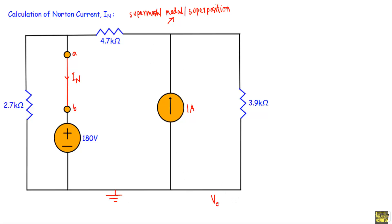Let this be our ground terminal — it will have a voltage of 0 volts for the nodal analysis reference node. This is node number one with voltage V1, and this is node number two with voltage V2. We have a voltage source of 180 volts connected between node 1 and the ground terminal, which means V1 equals 180 volts. We need to calculate V2 only. Assuming all unknown currents are outgoing from node 2, the 1 ampere current source is entering node 2.